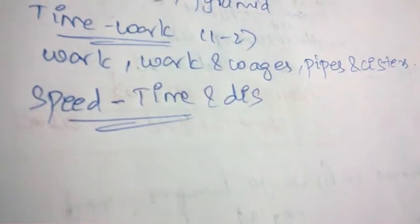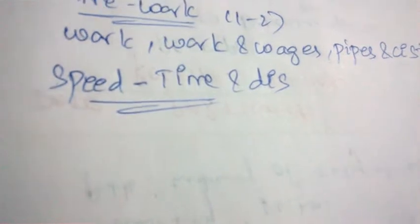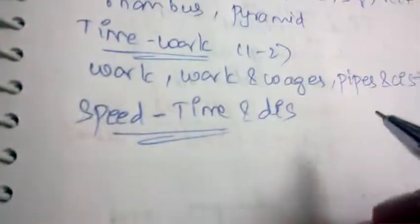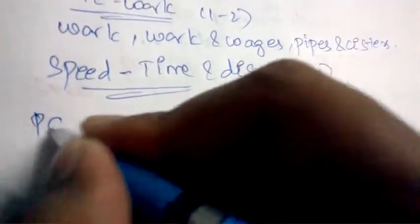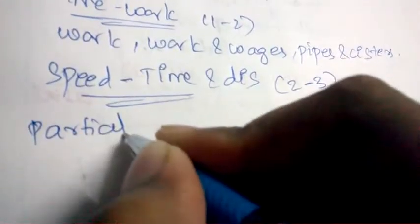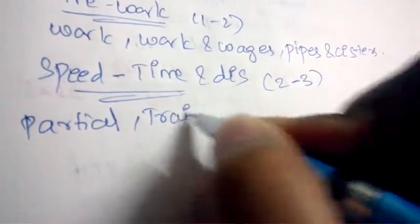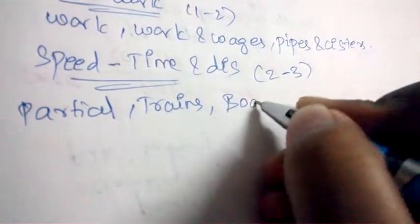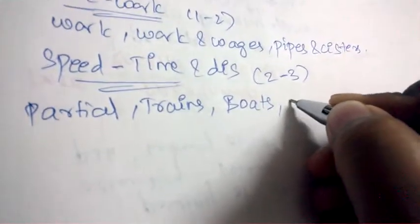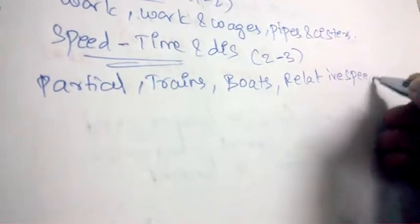Coming to Speed, Time and Distance — they'll be asking questions like how much speed a person can cover within a particular time. The weightage is 2 to 3 marks. Topics include relative speed, problems on trains, and problems on boats.